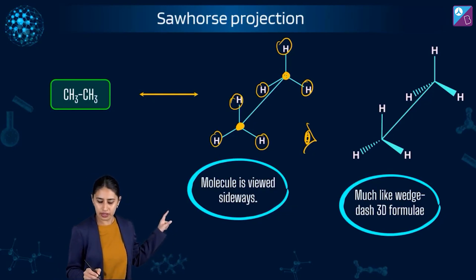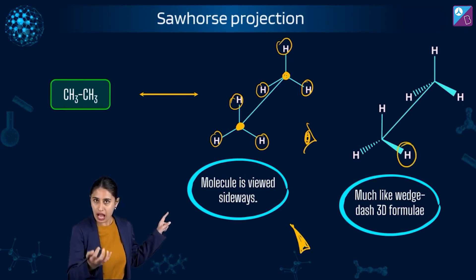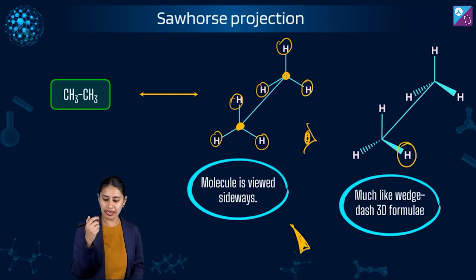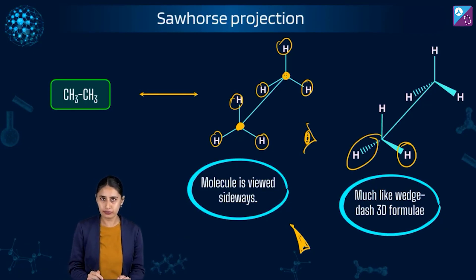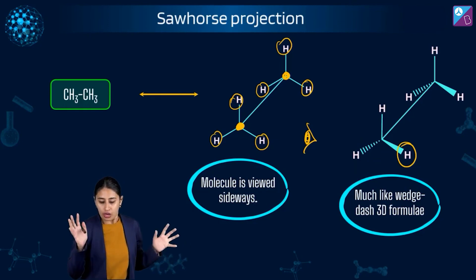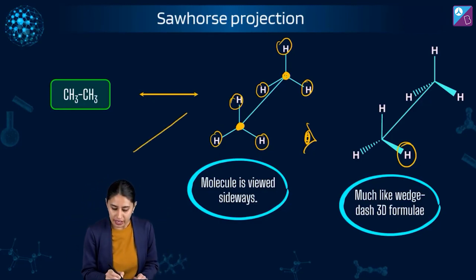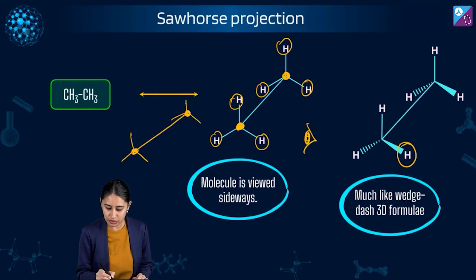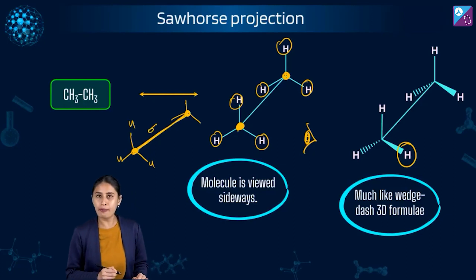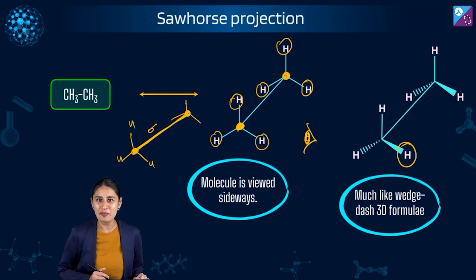In sawhorse projection, we write it using slant lines. The wedge lines out here means out of the plane, and the dash is inside the plane. The tetravalency of carbon is complete. These two positions represent where we are writing the hydrogens, and this is a carbon-carbon sigma bond — the very interesting, intriguing bond we are interested in under conformational isomerism, because the electronic distribution around the sigma bond is symmetrical.